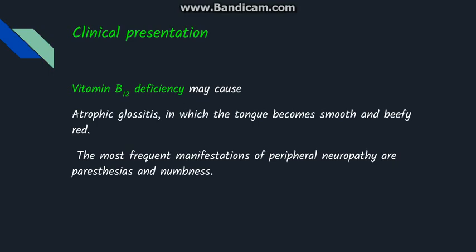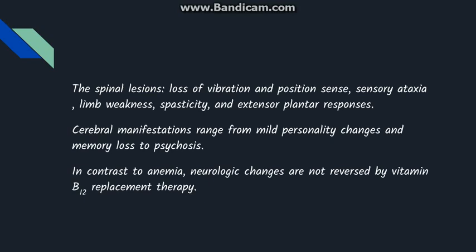The clinical course is very slow and patients present at a late age. The clinical presentation can include symptoms of vitamin B12 deficiency: atrophic glossitis in which the tongue becomes smooth and beefy red; peripheral neuropathy presenting as paresthesia and numbness of the fingers; spinal lesions with loss of vibration and position sense, limb weakness, and spasticity; and cerebral manifestations including mild personality changes and memory loss. Importantly, the neurological symptoms are not reversed by vitamin B12 replacement therapy, although the anemia can be corrected.